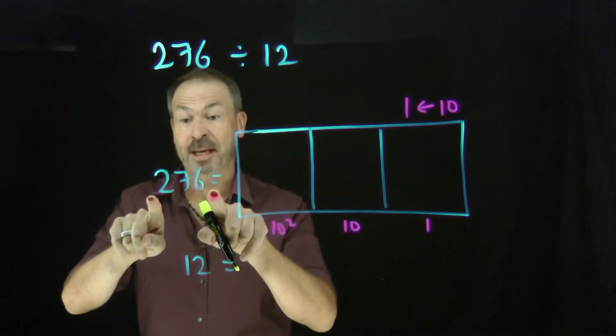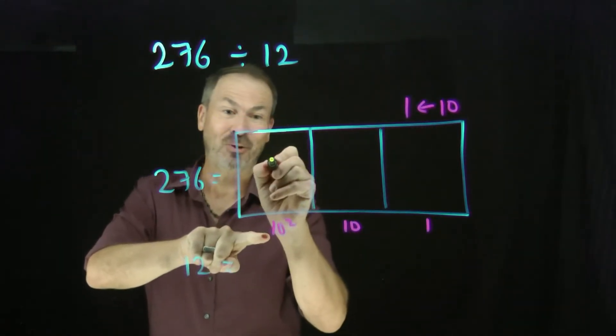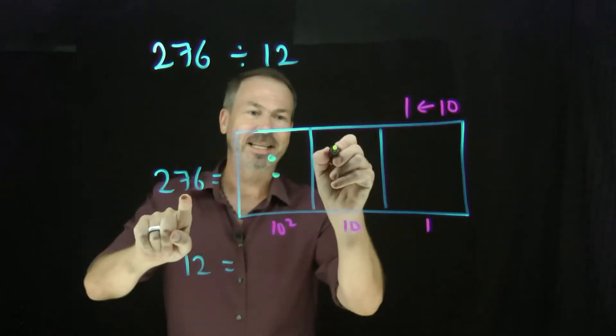First started by drawing a picture of 276. That's 200. That's two of these. Two 10-squareds. Two 100s. Seventy. Seven 10s.